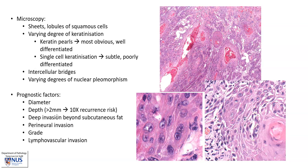Prognostically, the size, the depth of invasion — not just in terms of measurement, but also in terms of how far down the tumour has spread through the local structures — perineural invasion, lymphovascular invasion, and also the grade of the tumour are important prognostic factors.